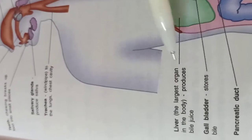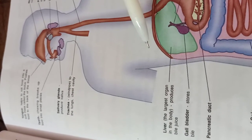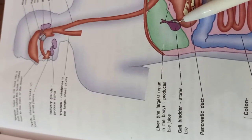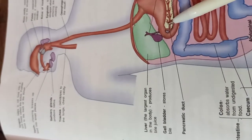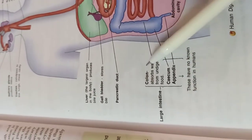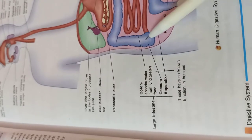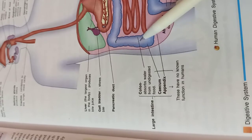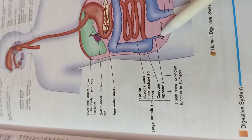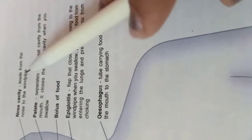The liver is the largest organ in the body and produces bile juice. The gallbladder stores the bile juice. The pancreatic duct is also visible in the diagram. The large intestine contains three parts: the colon, the caecum, and the appendix. The colon absorbs water from undigested food. The caecum and appendix have no known functions in humans.